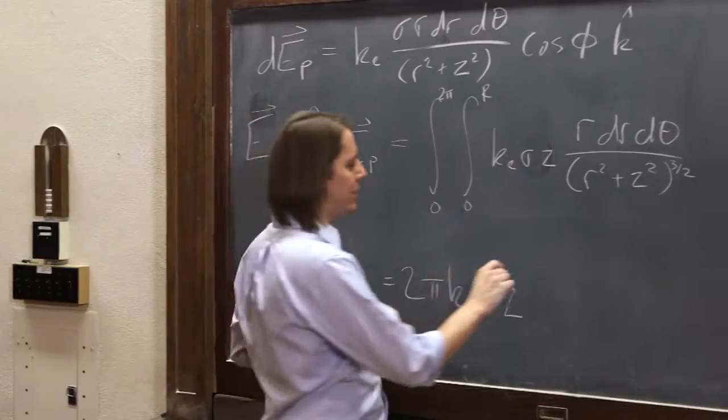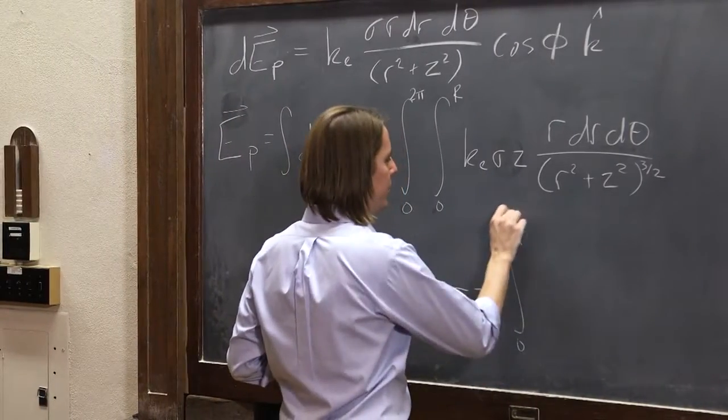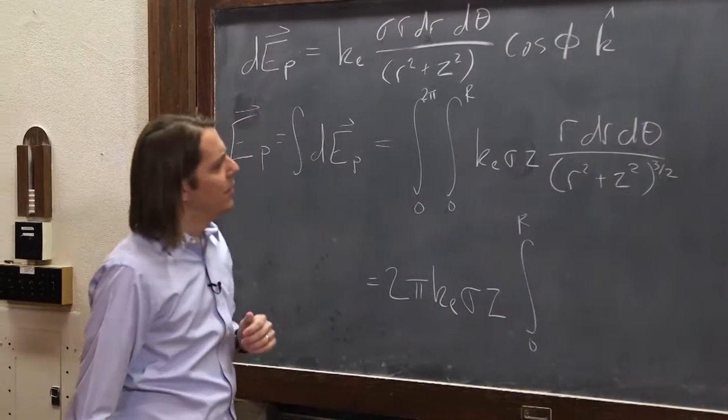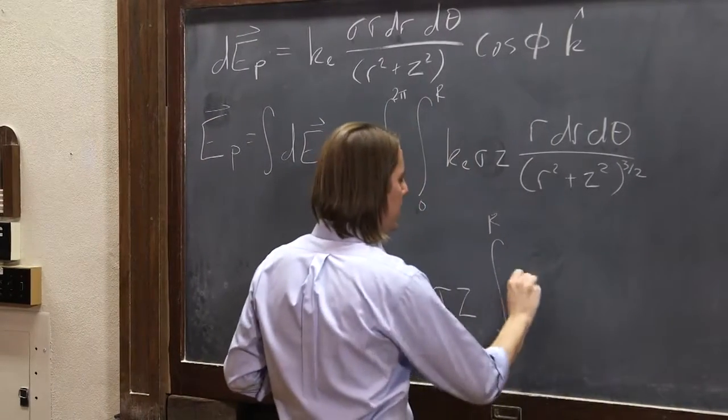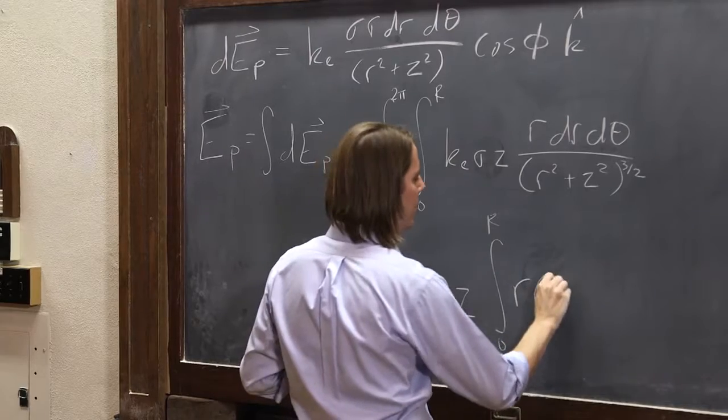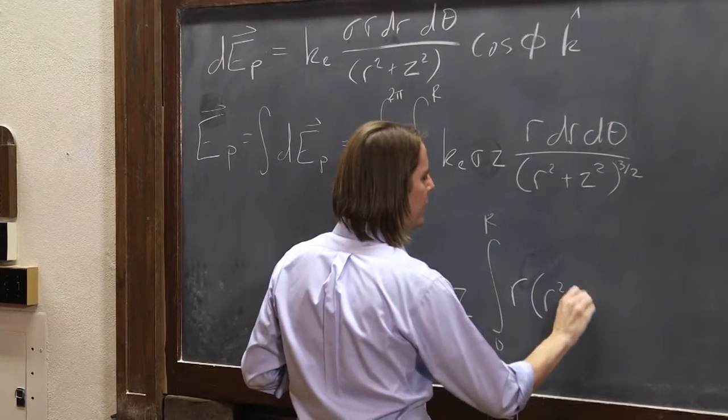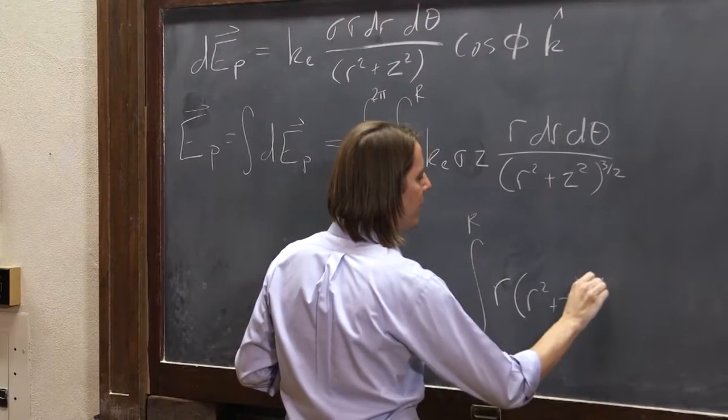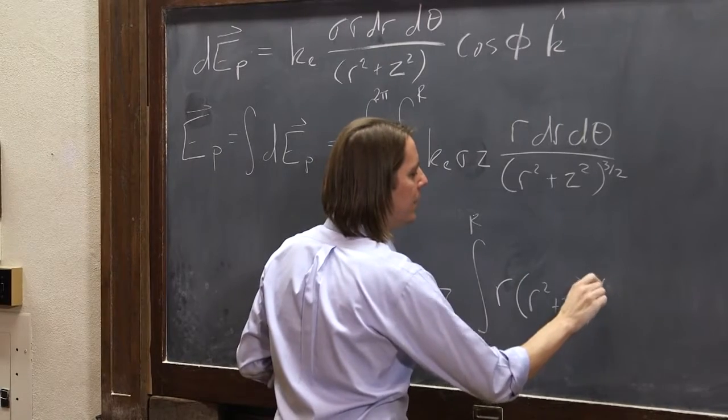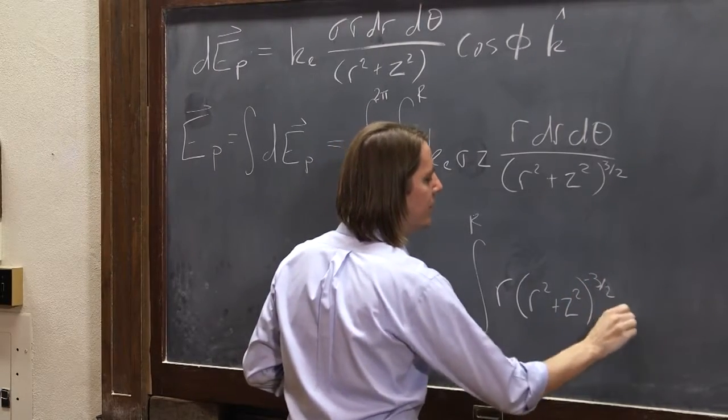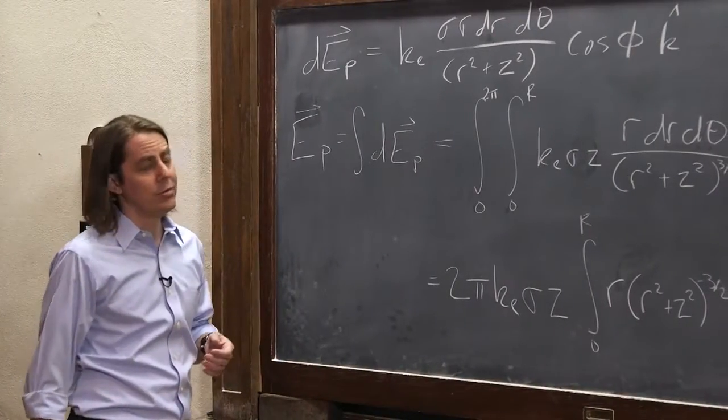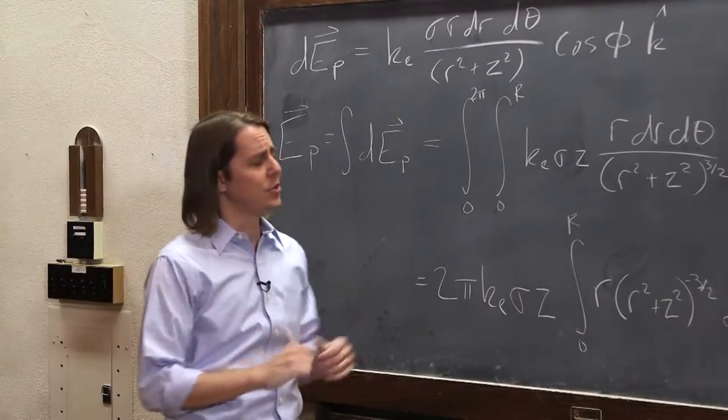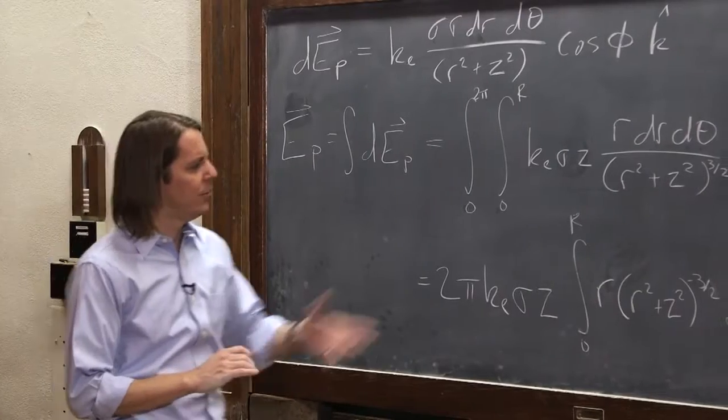And we're left with this integral from 0 to r of what? r, and I'm going to write it like this, r times r squared plus z squared to the minus 3 halves. Go ahead and just not write it as a quotient, dr, similar to how I did that integral when we had the point charge near the rod. And we'll just write it this way.